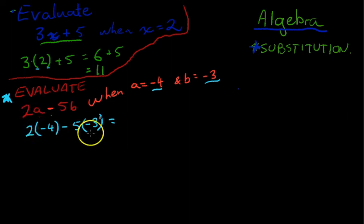I'm going to do it step by step though so you can see what's happening. That's 2 times negative 4. Now if you put that into your calculator, you'll get negative 8. And then this is minus 5 times minus 3. Minus 5 times minus 3, which is going to be positive 15.